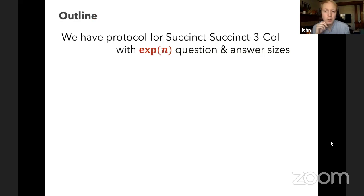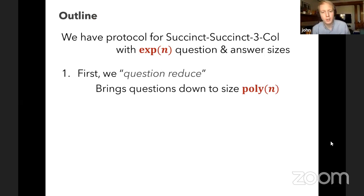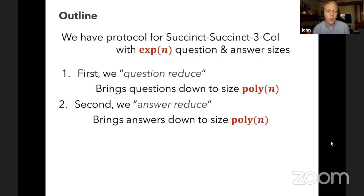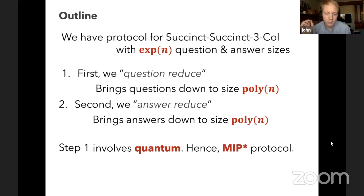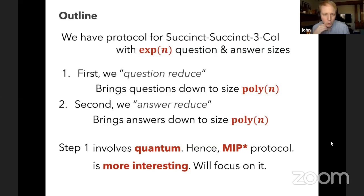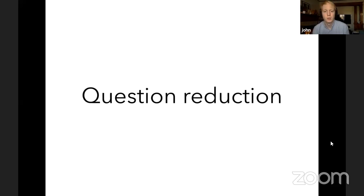We split this into two separate problems: the questions are too long, and the answers are too long. The outline is: first, question reduction brings the questions from exponentially large down to polynomial size, while keeping answers exponentially large. Then, answer reduction also brings the answers down to polynomial size. Step one involves quantum — this is why we have an MIP* protocol rather than an MIP protocol — and it involves the new ideas. Answer reduction is more standard.